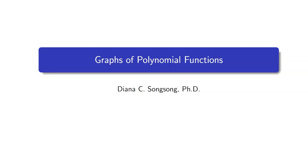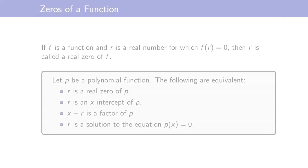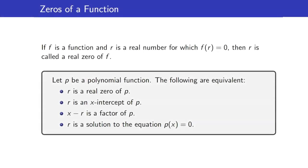In this lesson, I will discuss graphing polynomial functions. Let us first recall the definition of a zero of a function. Suppose that we have a function, not necessarily a polynomial function, and r is a real number for which f(r) is equal to zero, then we say that r is a real zero of f.